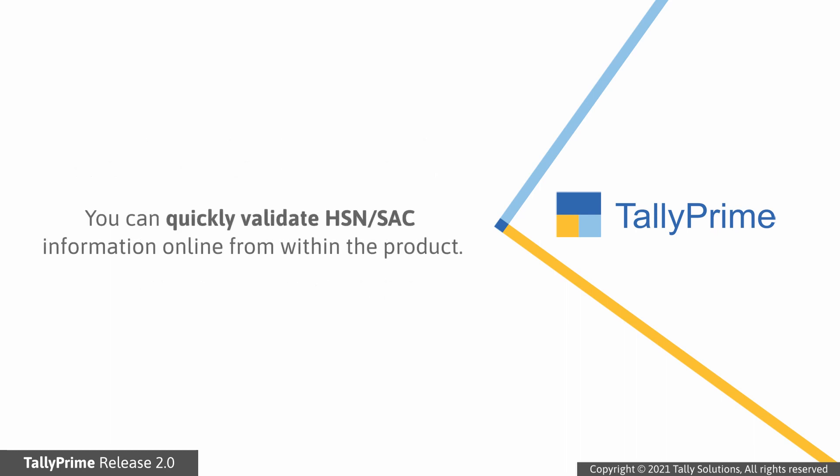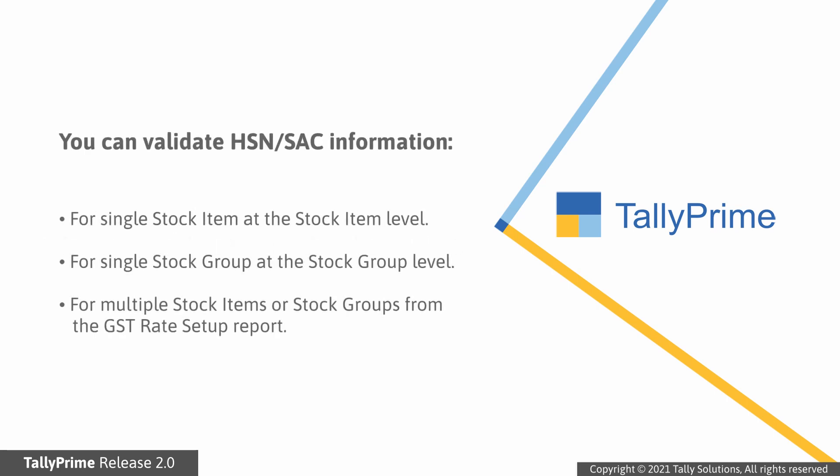TallyPrime Release 2.0 onwards, you can quickly validate HSN or SAC information online from within the product. You can do so at the stock item or stock group level, or for multiple stock items in the GST Rate Setup Report.